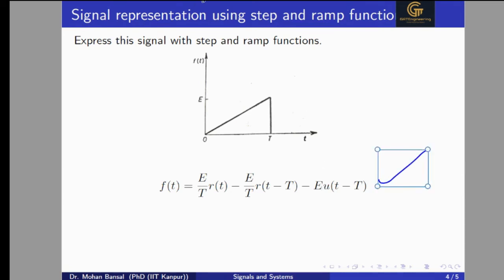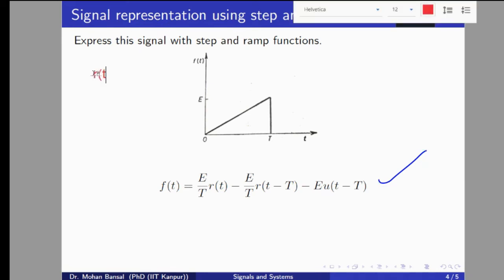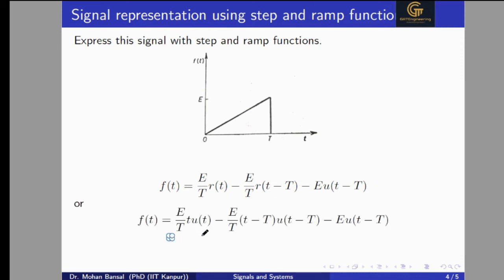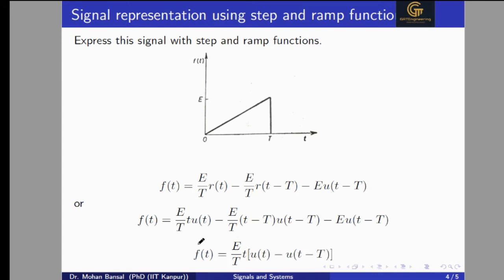We also know that the ramp signal r(t) can be written as t·u(t), since the ramp is defined for t greater than 0. So we replace r(t) with t·u(t) and r(t−T) with (t−T)·u(t−T). Substituting and simplifying, terms cancel out and we get the final expression: (E/T)·t·u(t) − (E/T)·(t−T)·u(t−T) − E·u(t−T), which simplifies further to (E/T)·t·u(t) − (E/T)·t·u(t−T).